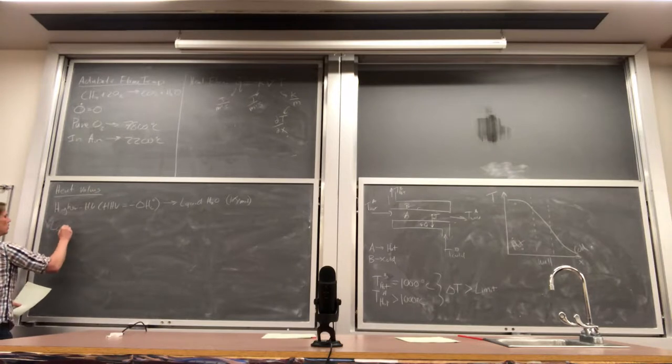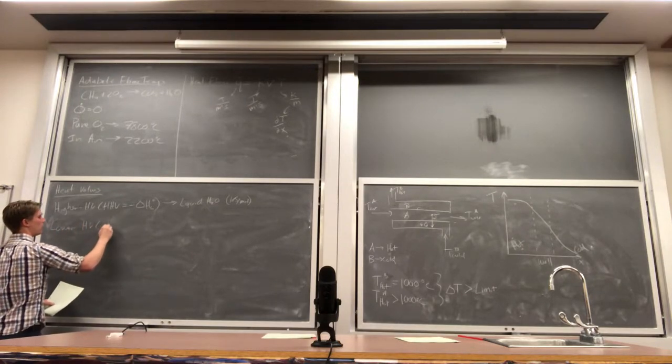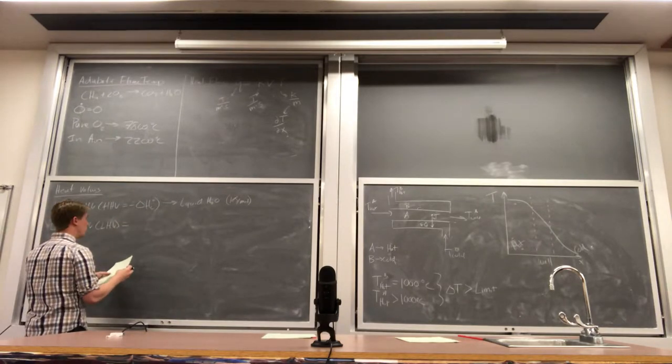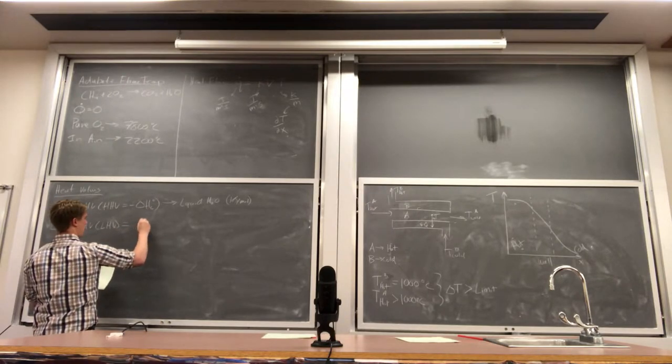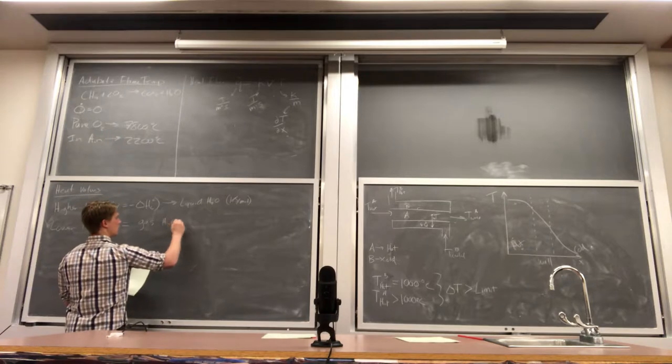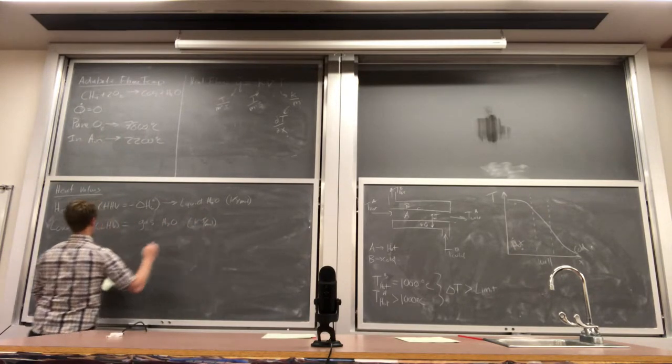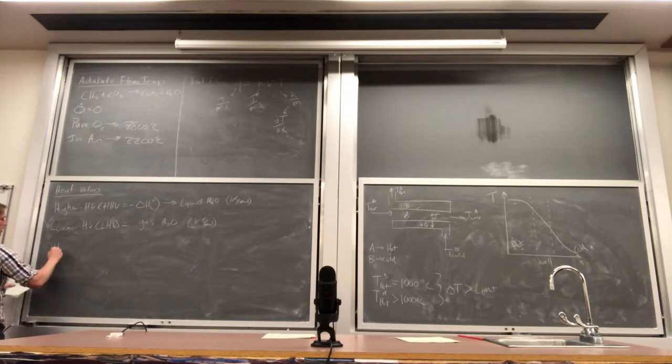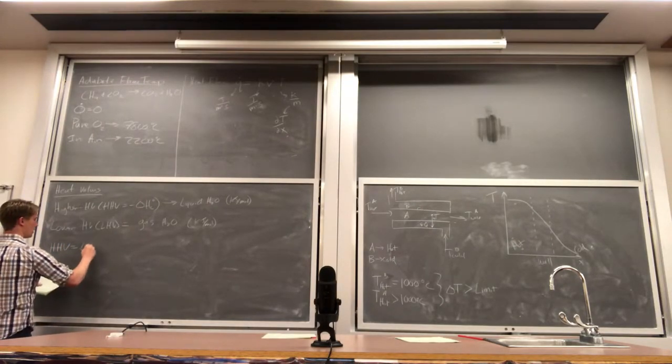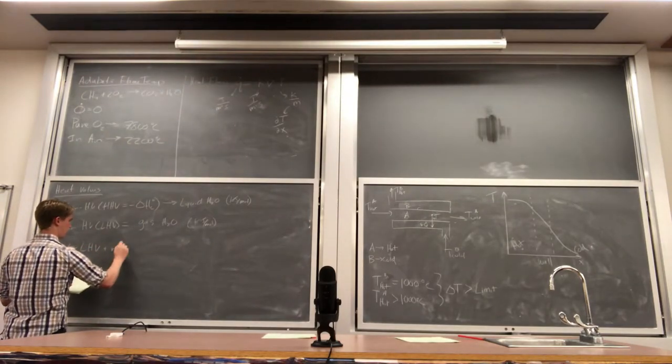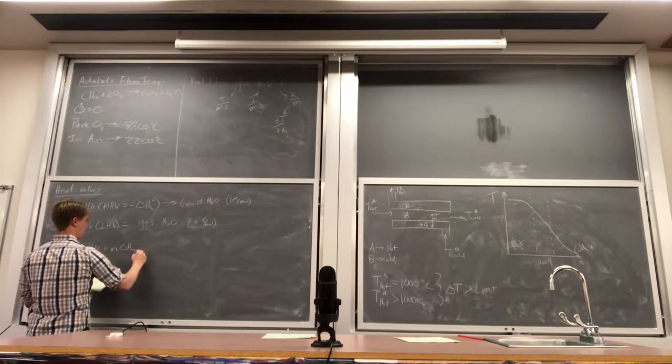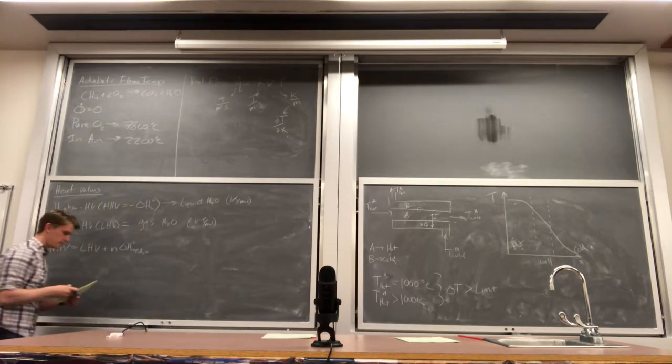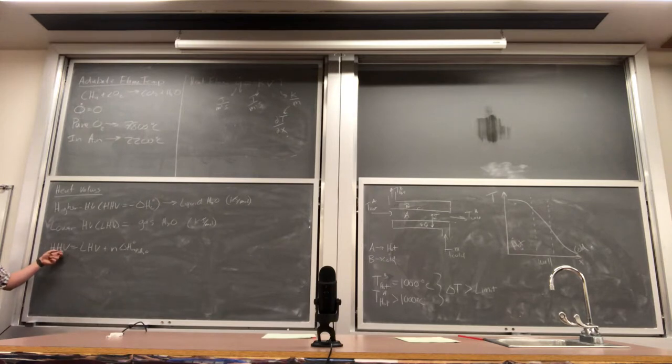The lower heating value, LHV, is equal to the, so basically, this is with gas water as a product. And again, this would be in kilojoules per mole. And so the relationship between these two is that the higher heating value is equal to the lower heating value, plus at 25 degrees C. That's all you have to do.